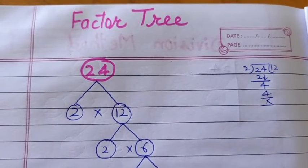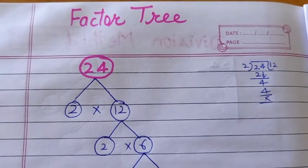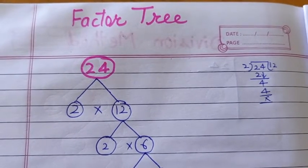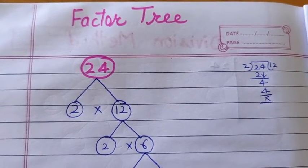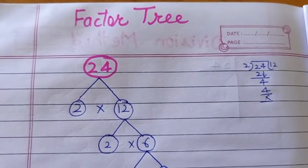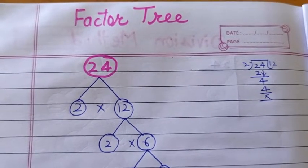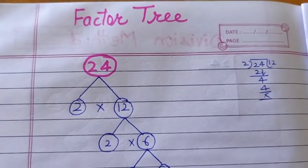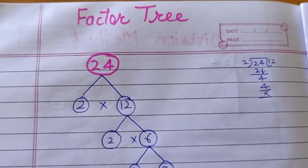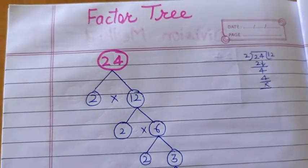Hello student, in today's video we will learn how to make a factor tree. In last video we learned how to find out the factors and common factors. Today we will learn how to make a factor tree in this method and how to find out the factors. And for this let's take an example. We have a number 24.